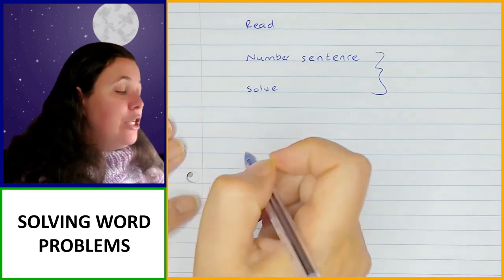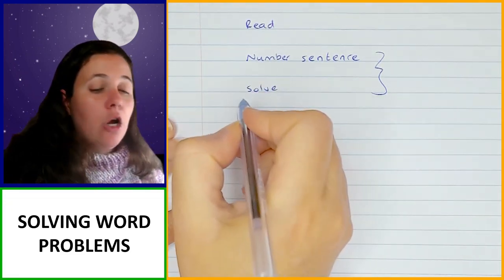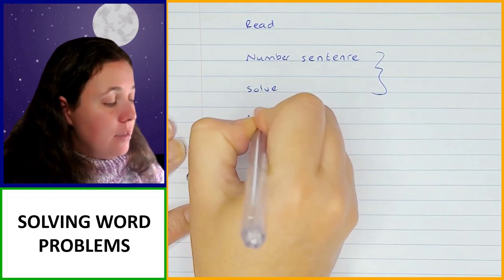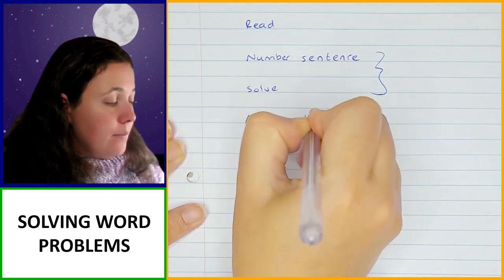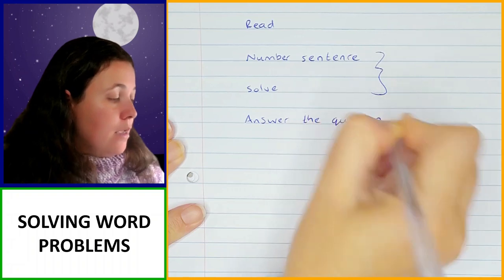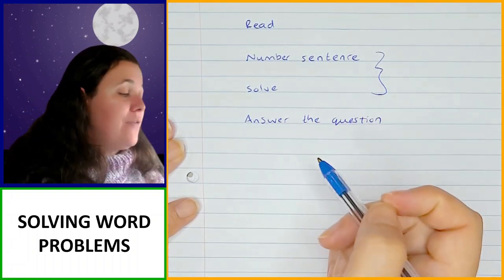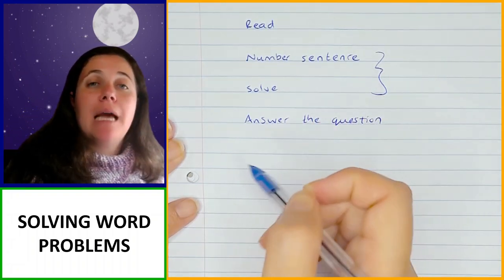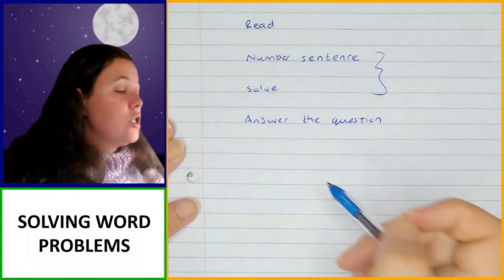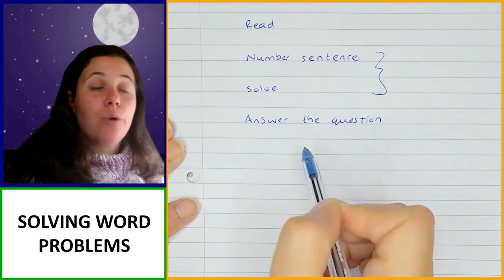The next thing you need to do once you have solved it is go back and answer the question that they asked. You can't just leave your answer as five — if they asked how many apples, you need to answer saying five apples. So you need to put it back into the context of the word problem.